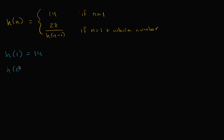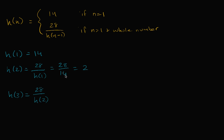h of two — now we're falling into this case because two is greater than one and it's a whole number. So it's going to be 28 over h of one. We know h of one is 14, so it's 28 over 14, which is equal to two. Now h of three — we fall into this case again. It's going to be 28 divided by h of two, which equals two, so we go back to 14. And h of four is going to be 28 divided by h of three, which is 28 divided by 14, back to two.